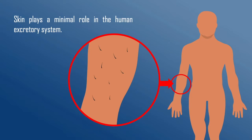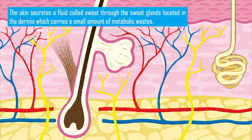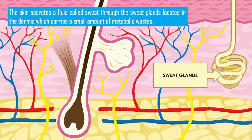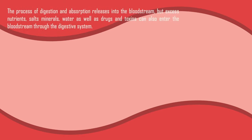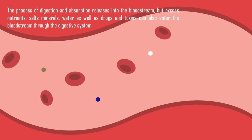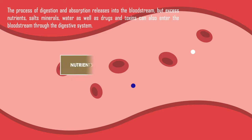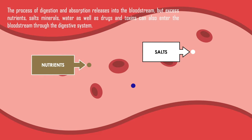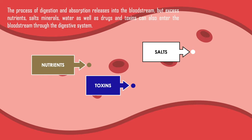Skin plays a minimal role in the human excretory system. The skin secretes a fluid called sweat through the sweat glands located in the dermis, which carries a small amount of metabolic waste. The process of digestion and absorption releases into the bloodstream excess nutrients, salts, minerals, and water, as well as drugs and toxins, which can also enter the bloodstream through the digestive system.